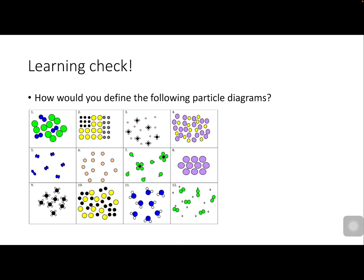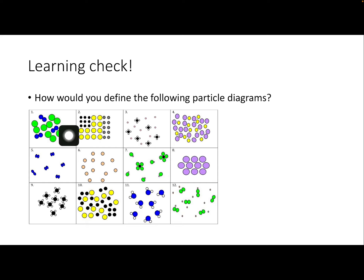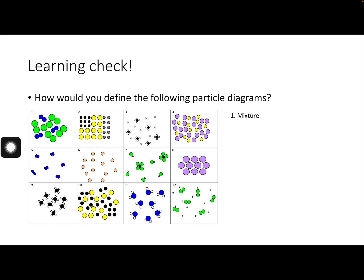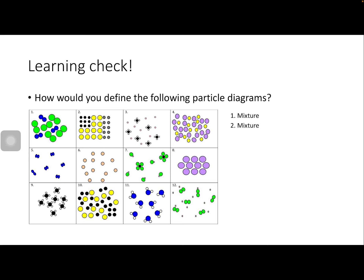Quick learning check — let's identify these particle diagrams. Number one has green and blue dots that are not connected to each other. Because it's two different colors and they're not connected, this is a mixture. Number two has three different colors, and none of them are connected, so this is also a mixture.